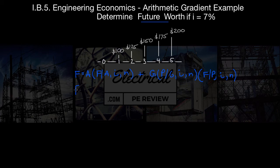Our first one, we've got F equals A times 1 plus i to the n minus 1 all over i. And our second term, we've got G times P given G. This is a big one. This is going to be 1 plus i to the n minus i times n minus 1 over i squared times 1 plus i to the n.